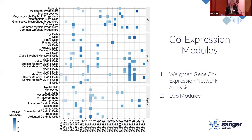Coexpression modules are lists of genes that tend to be coexpressed or correlated. A common algorithm called weighted gene coexpression network analysis identifies these modules, which is exactly what I implemented. I identified 106 gene modules based on the 20,000 expressed genes. Some modules have pretty cell-type-specific effects — for example, one capturing the CD4-positive T-cell signature.